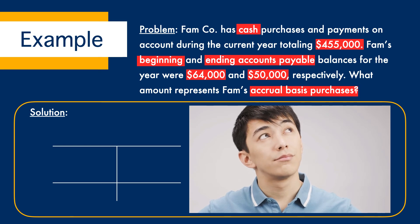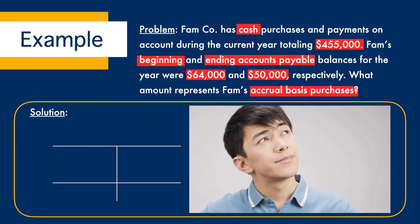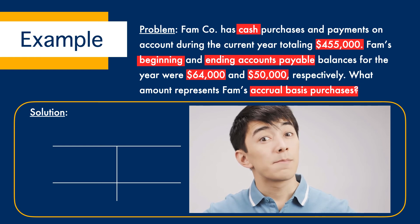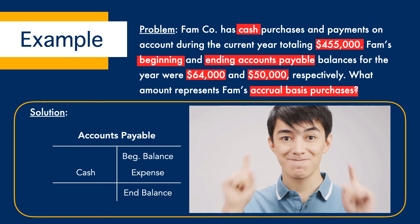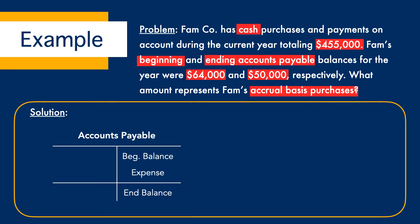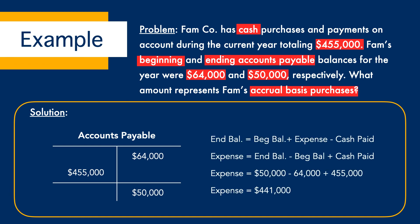Can you take a guess on which T-account we will be using to solve this problem? With the given information of purchases and beginning and ending AP balances, we know that we're going to use the accounts payable T-account. So let's go ahead and plug and chug. We have cash of $455,000, a beginning balance of $64,000, and an ending balance of $50,000. After a few calculations, we have the answer, which is $441,000 for the accrual purchases.